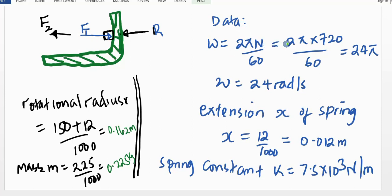The data given to us is that we have the revolution of the system at 720 revolutions per minute, and we are required to change this angular speed to radians per second. Therefore omega is 2π n divided by 60 in radians per second, whereby n is in revolutions per minute. Substituting the figure gives us 24π radians per second. The extension of the spring to make contact with the rim is x, equal to 12 millimeters, which converts to 0.012 meters. The spring constant is 7.5 kilonewtons per meter, which converts to 7.5 × 10³ newtons per meter.